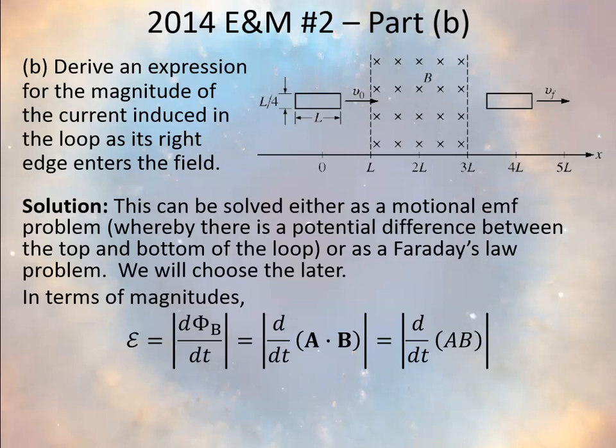The area vector A⃗ points normal to the loop — either out of or into the page. Since we're working with magnitudes it doesn't matter; we'll use into the page. The B field is also into the page, so A⃗ · B⃗ is just the product of the magnitudes: area times field strength. So the induced EMF is d/dt(A·B). The magnetic field is constant, so B comes out of the time derivative, but the area of the loop receiving the magnetic field is not constant.